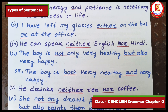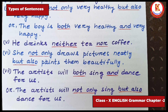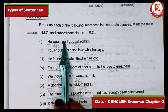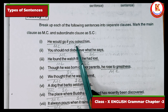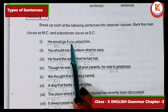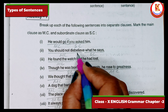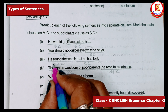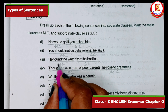Activity seven: identify the subordinate clause (SC) and main clause (MC). If you find any wh-word, 'if', or 'that', that sentence part is the subordinate clause; the remaining part is the main clause. 'He would go if you asked him' — 'if you asked him' is SC. 'You should not disbelieve what he says' — 'what he says' is SC. 'He found the watch that he had sold' — 'that he had sold' is SC; 'he found the watch' is MC.